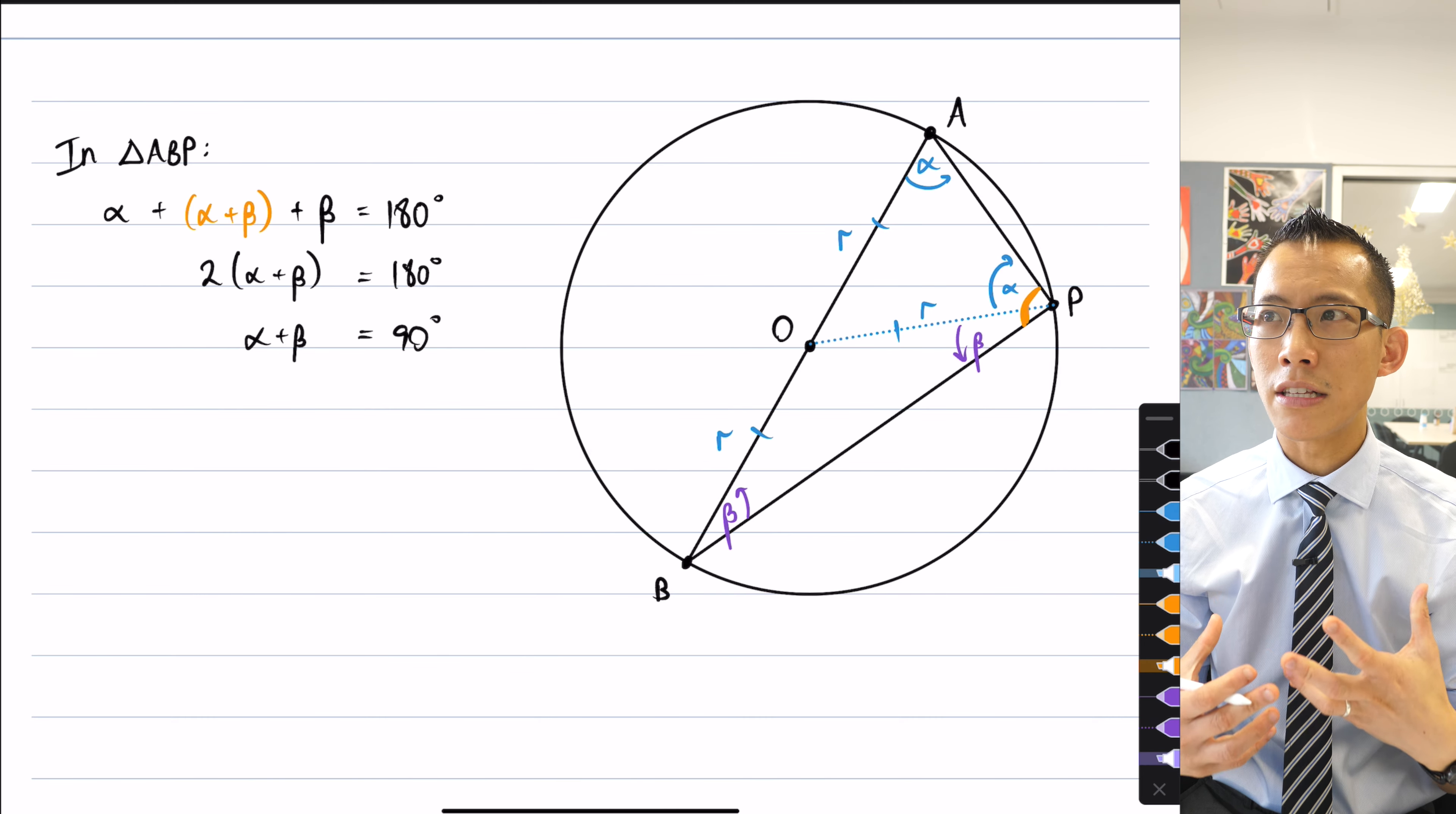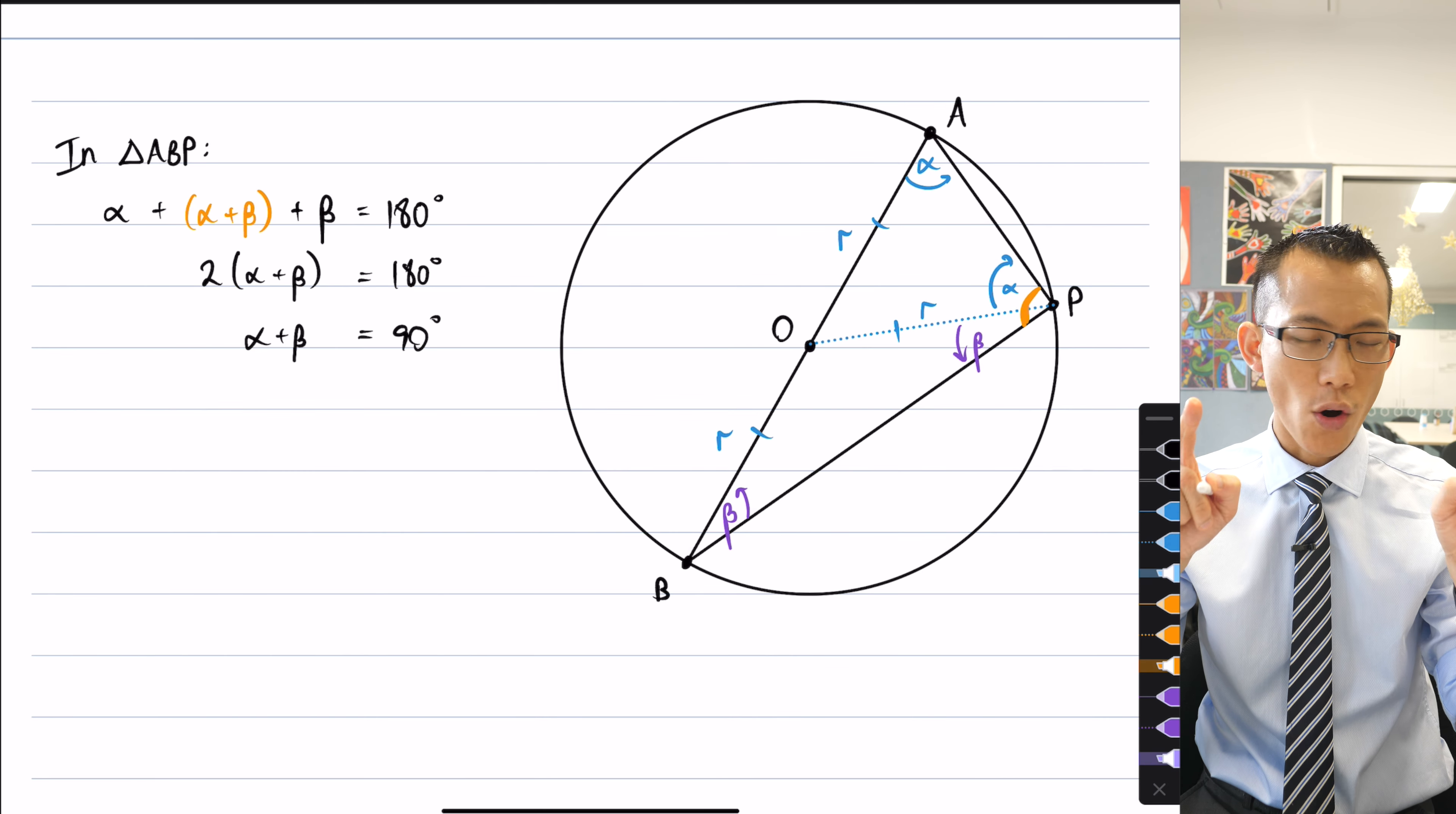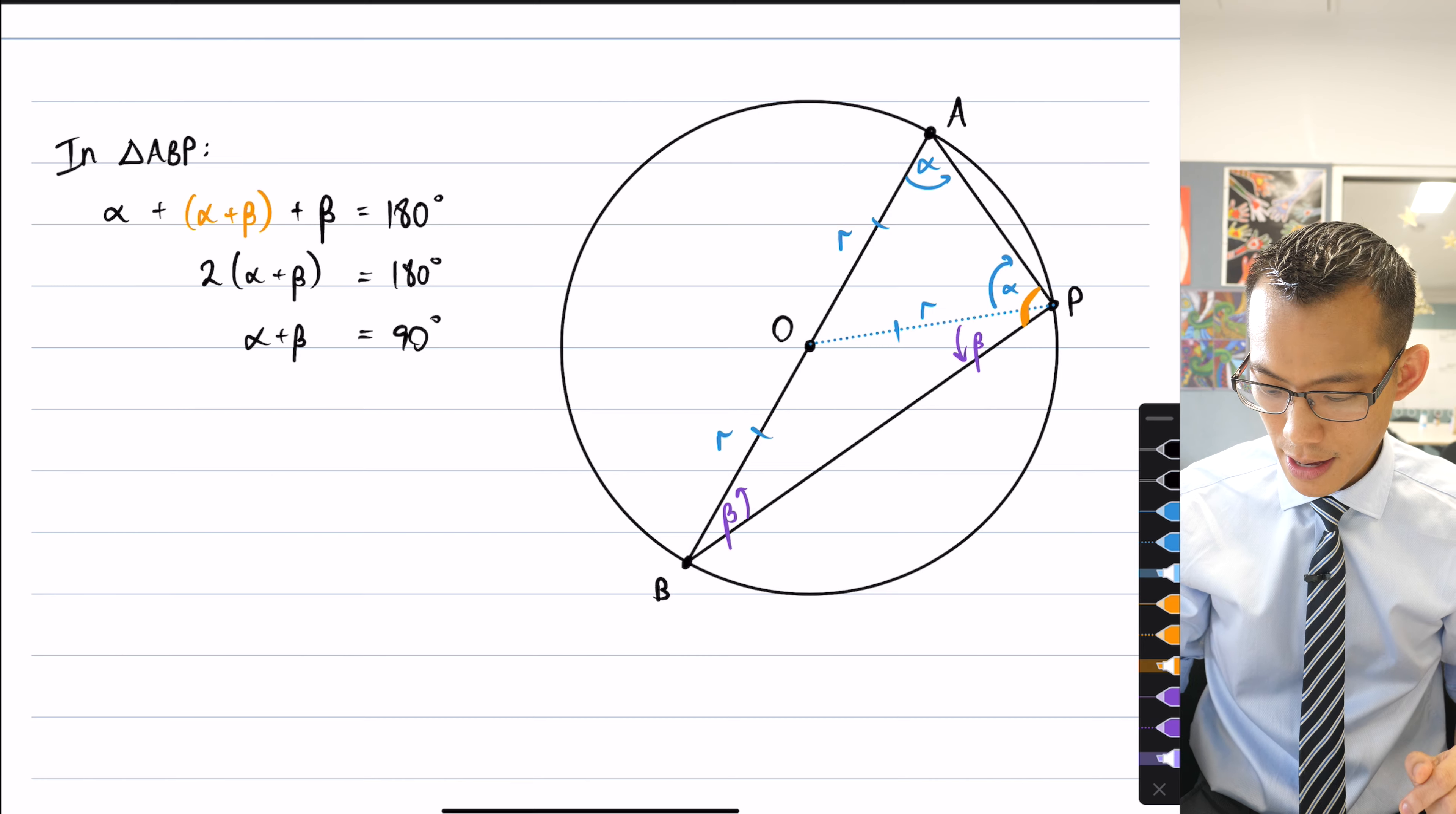But also just in general, it's a logical fallacy that A leads to B also is the same as B leads to A. The converse is not always true. Let me give you a couple of really obvious examples.